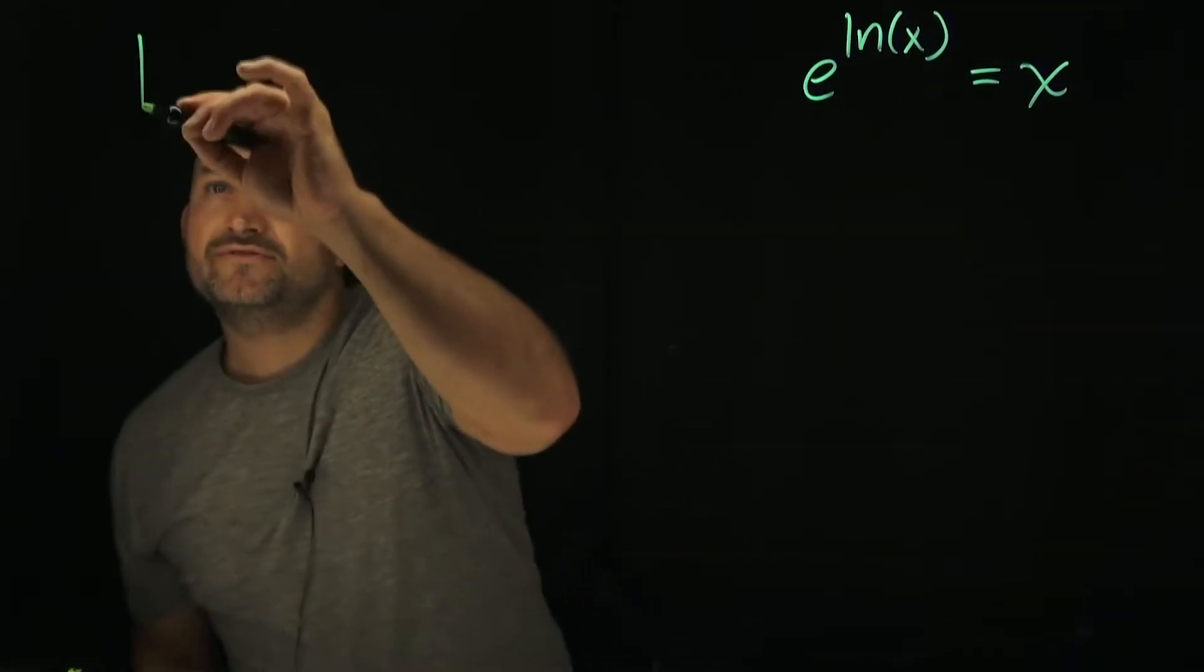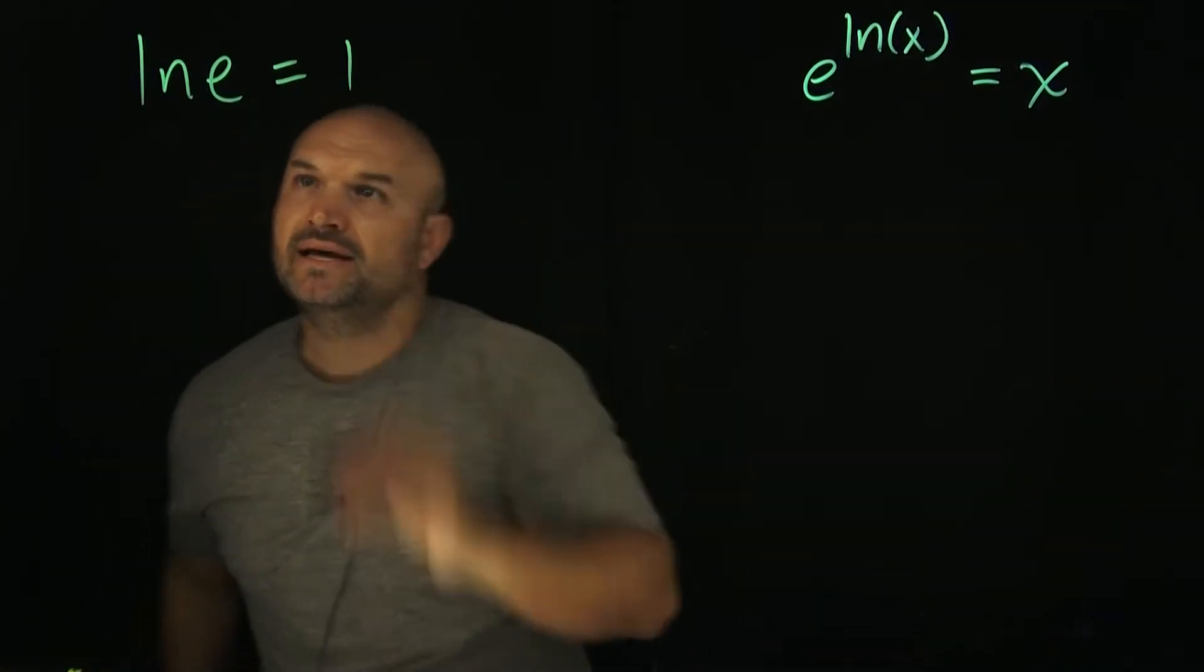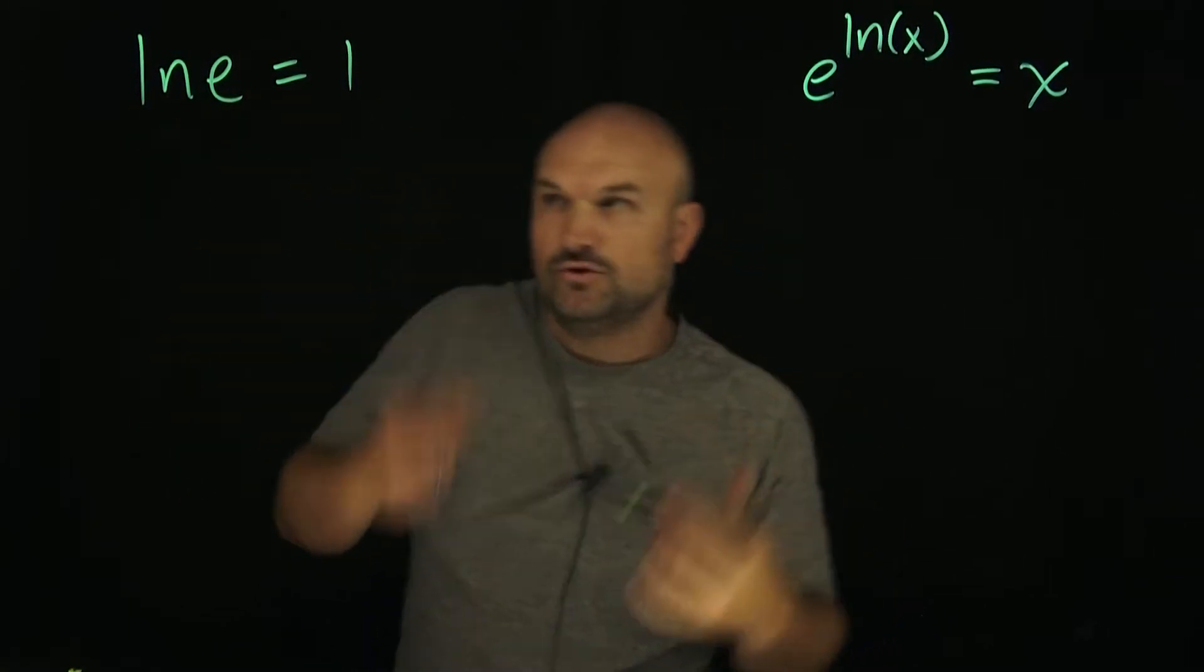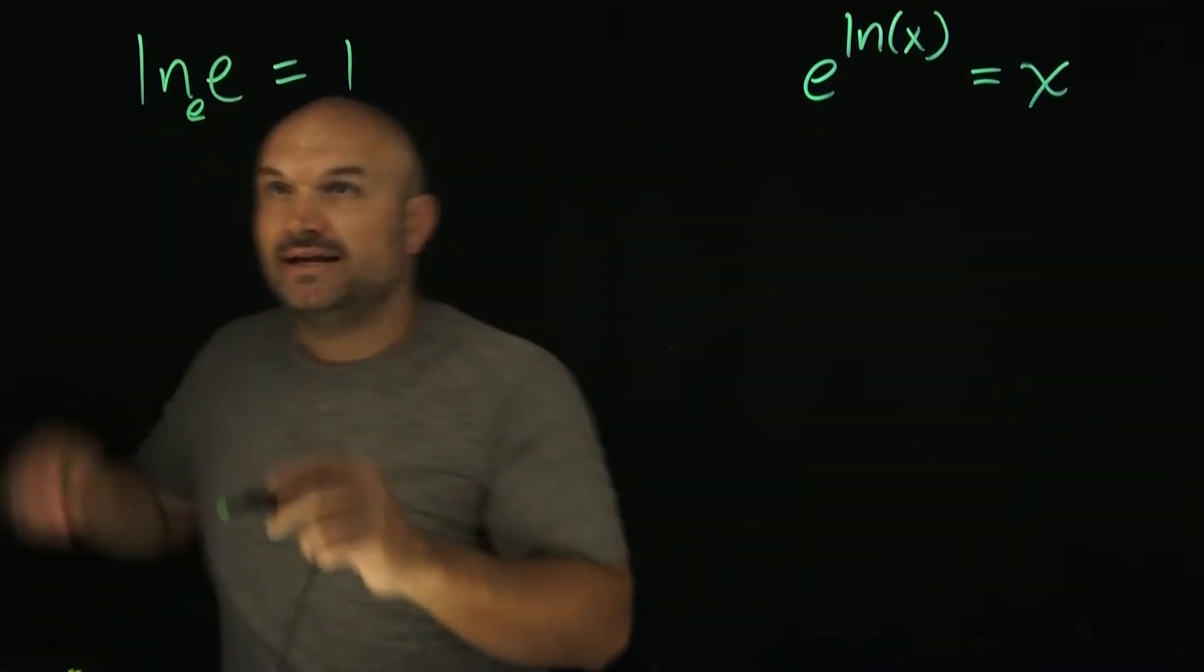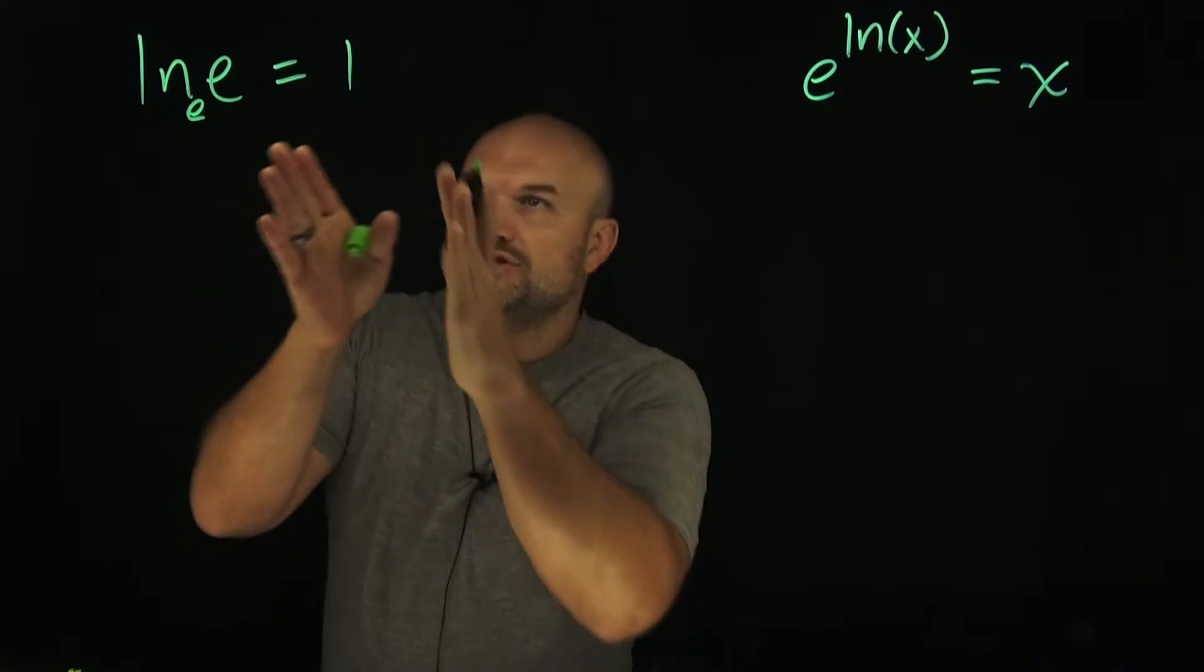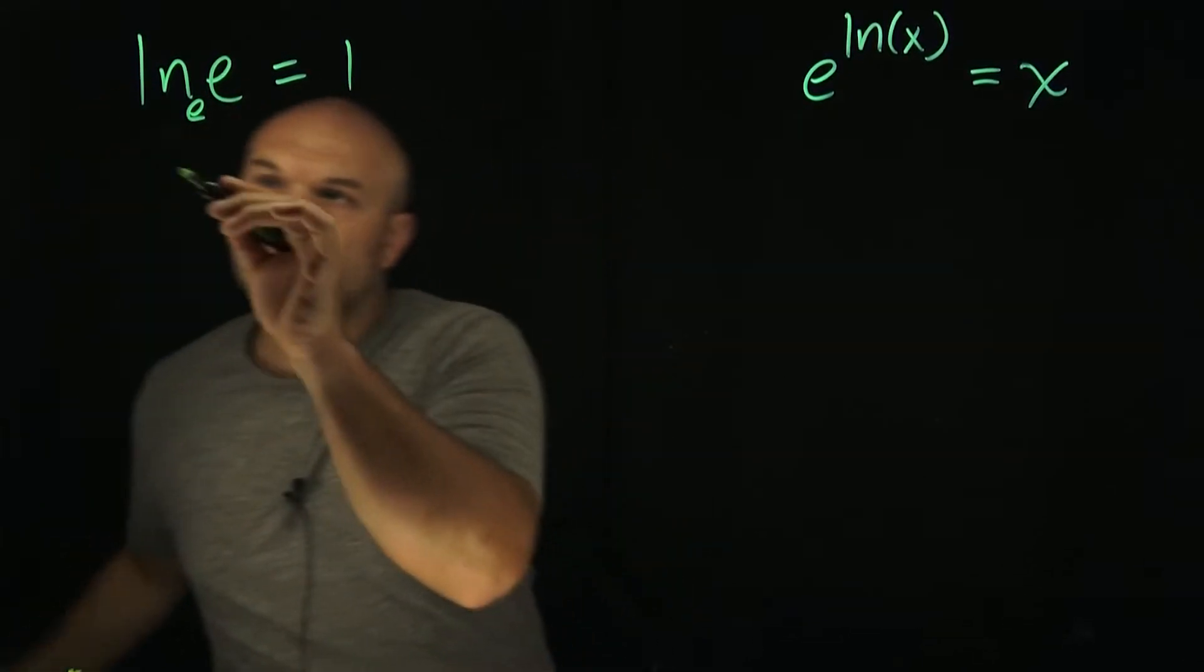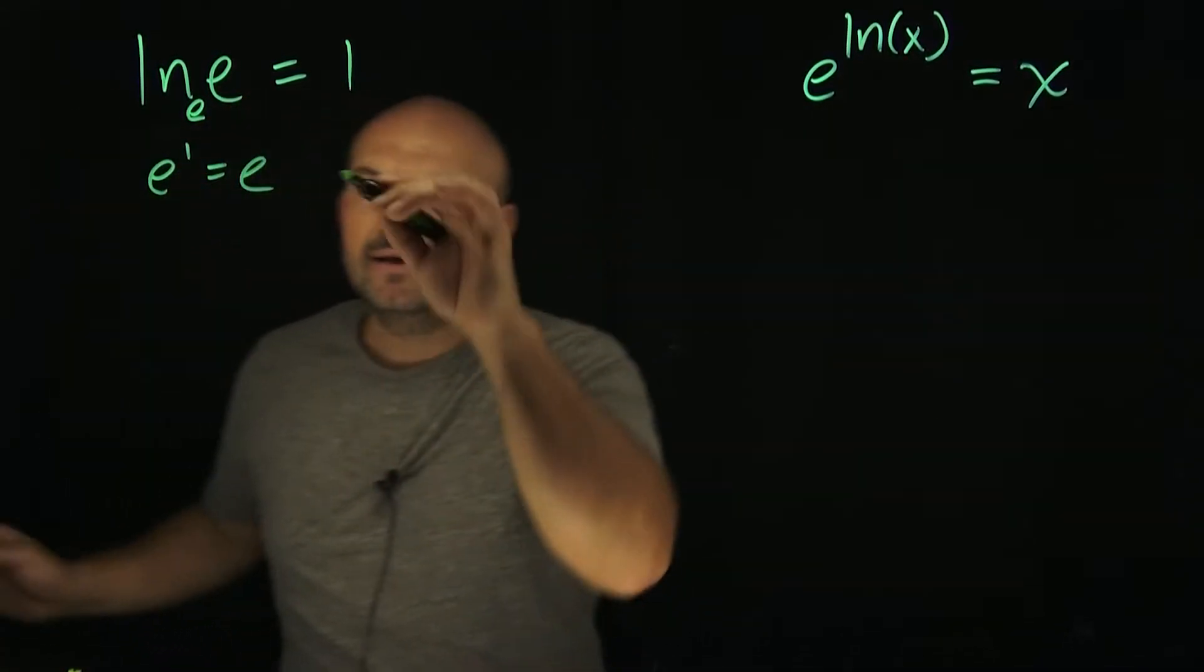When students are first learning logarithms, one of the first rules we teach them is that the natural logarithm of e is equal to 1. Because if ln has a base e, if you rewrite this in exponential form, you'd have e to the first power equals e, and we know that works.